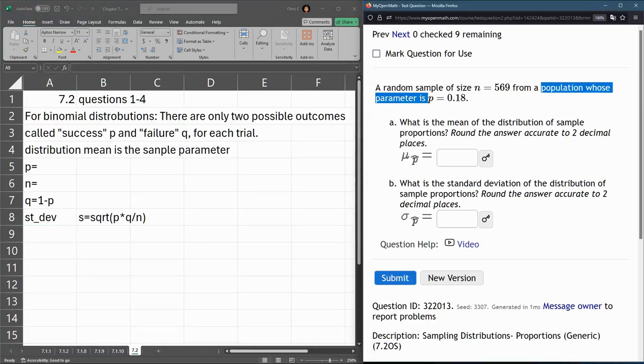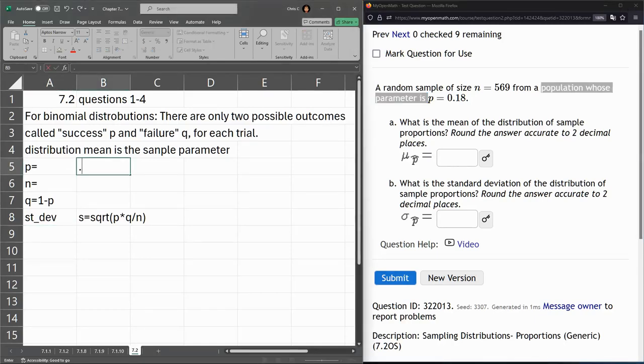The p parameter is the probability of success. So I'm going to just put that value in here, 0.18 for this problem.